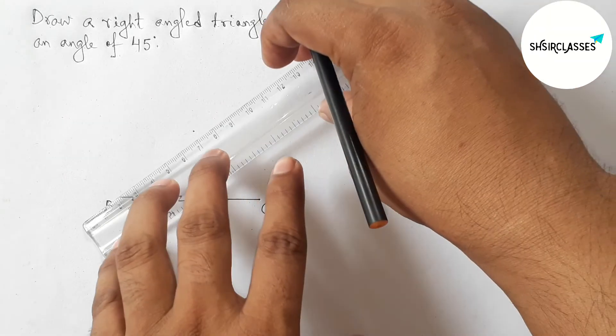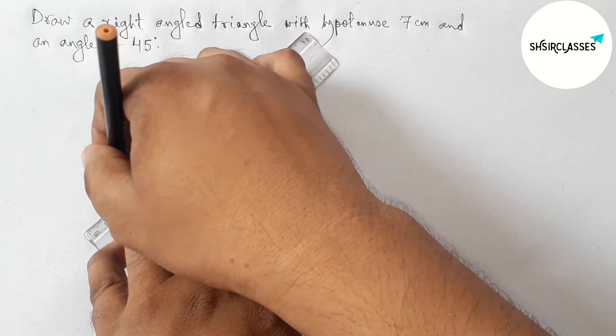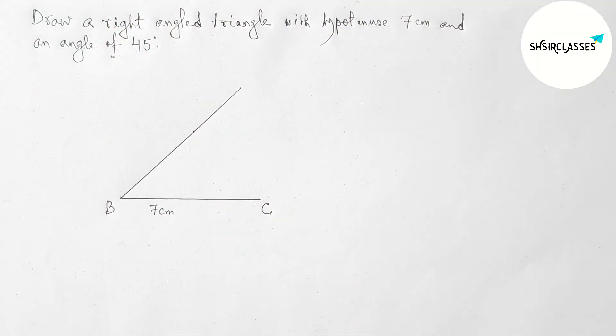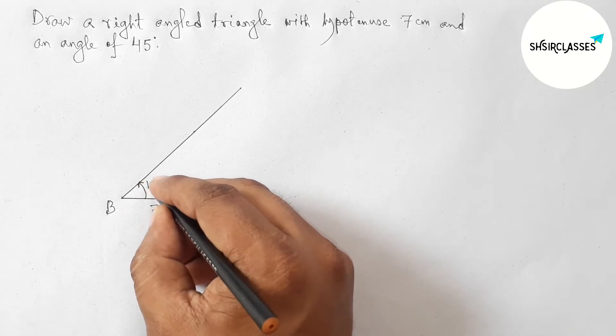So between 40 to 50, here marking 45 degree angle. Next, joining this line to get here a 45 degree angle.